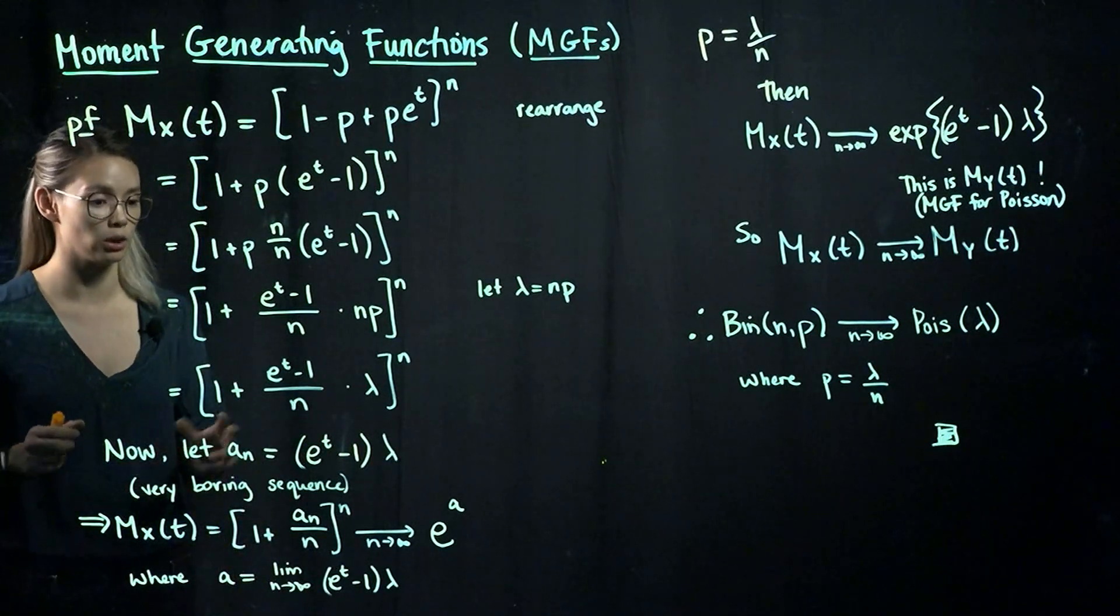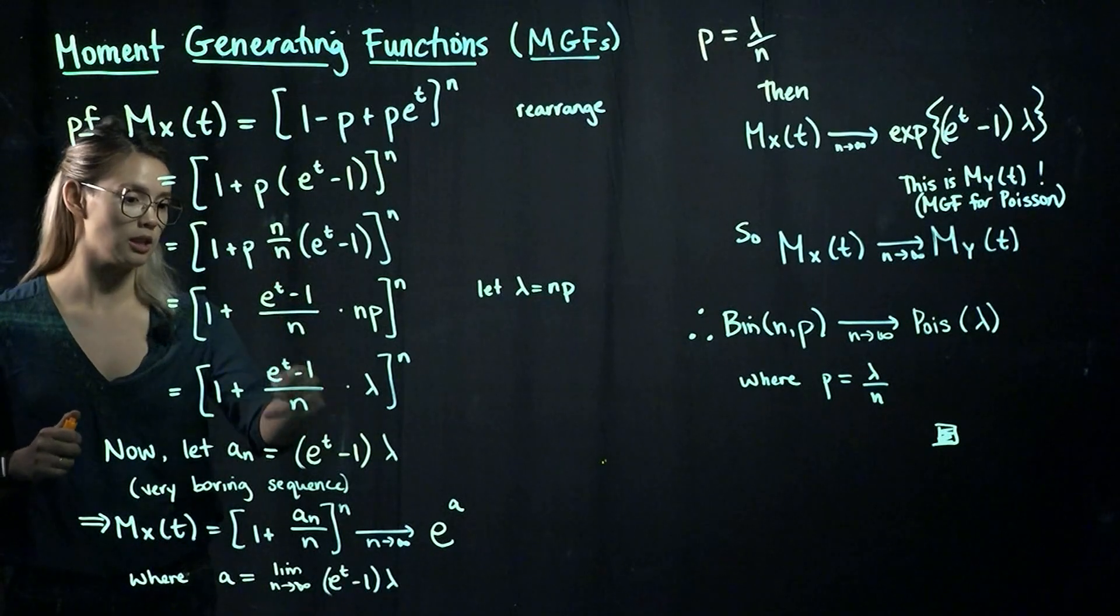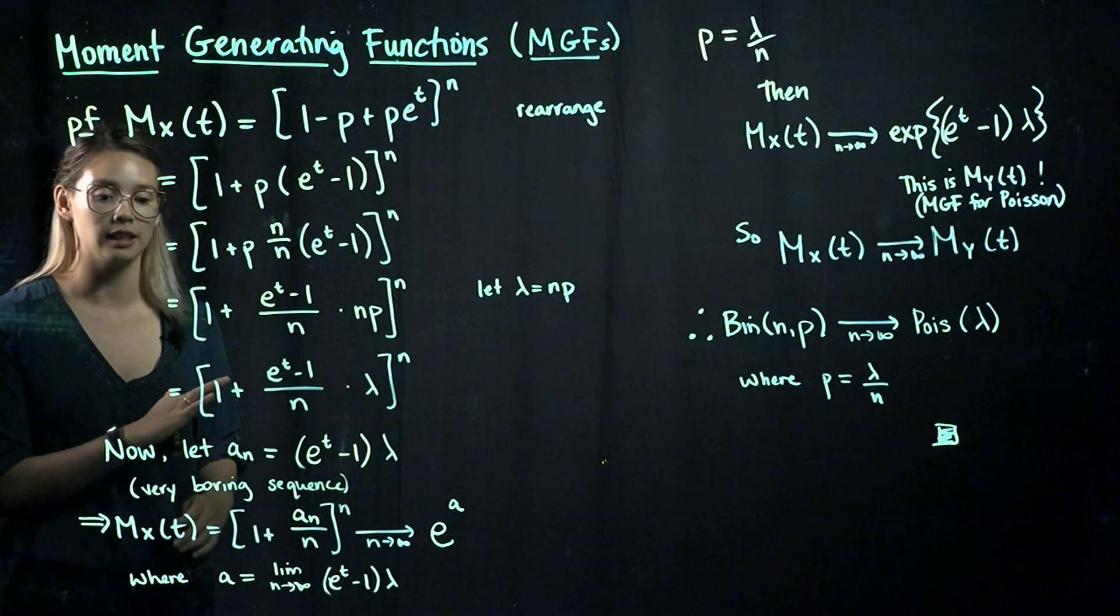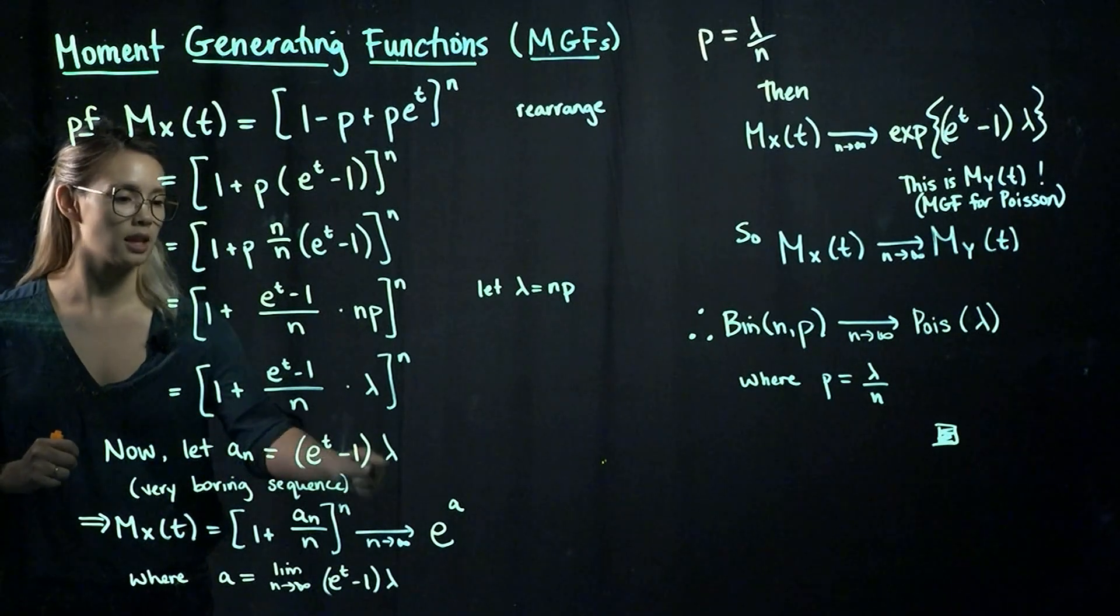So what we need to do now in order to apply this is find some sequence in here. So we're going to choose a very boring sequence that won't actually have any n in it at all. So our sequence is going to be e to the t minus 1 times lambda.